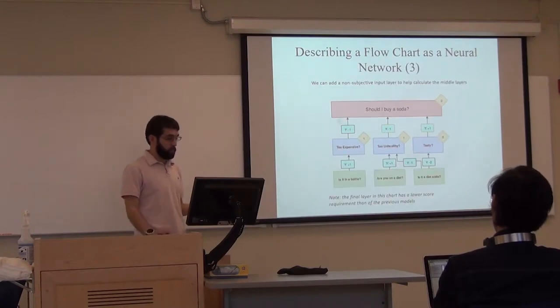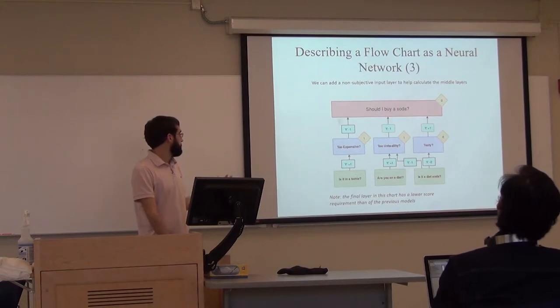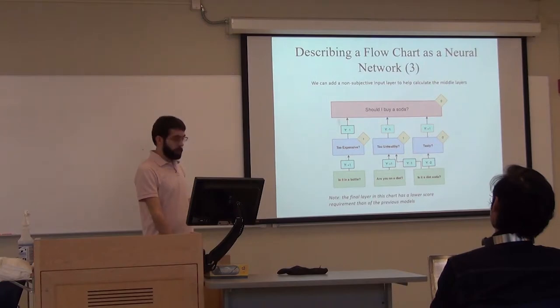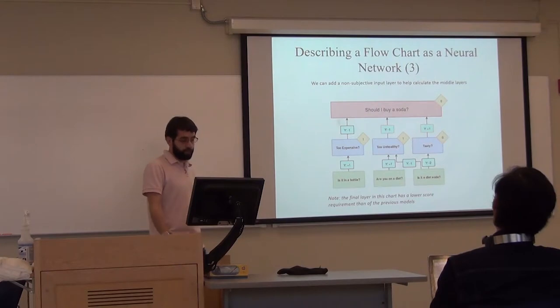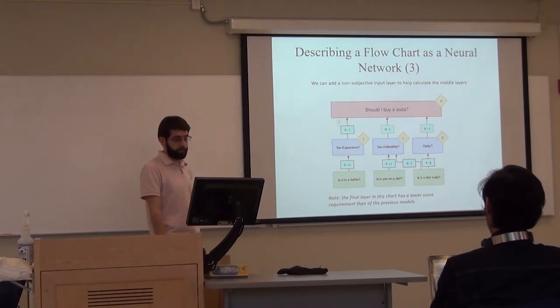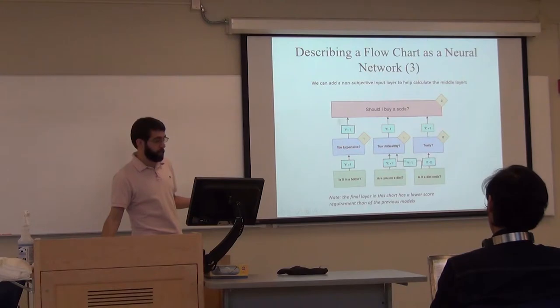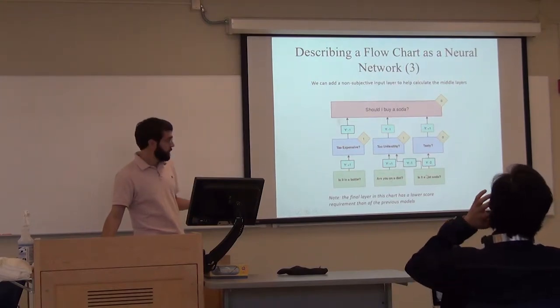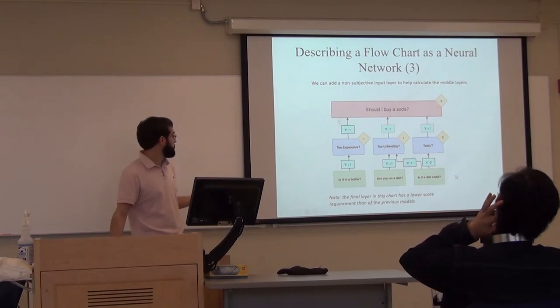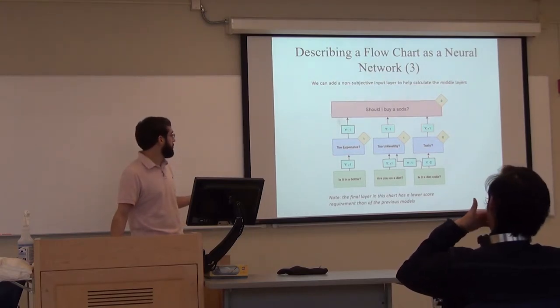I can ask more, less subjective questions based on the data. This is adding a second layer to the neural network. Is the soda in a bottle? If it is, then that means it's more expensive. If I'm on a diet, then it decreases the threshold for unhealthiness. But if it is a diet soda, it is healthier, but it also tastes worse. You see how these can interact between layers. This is a very simple example of how a neural network works.